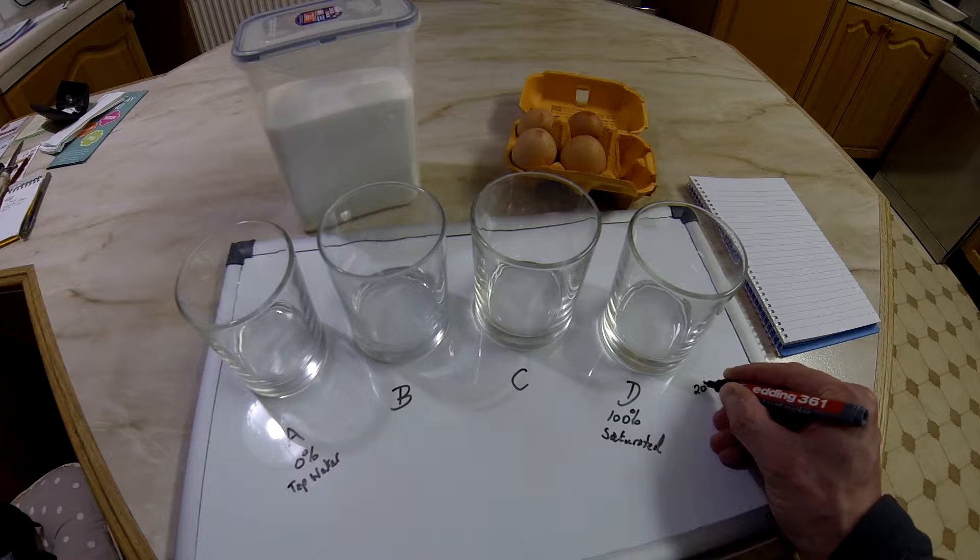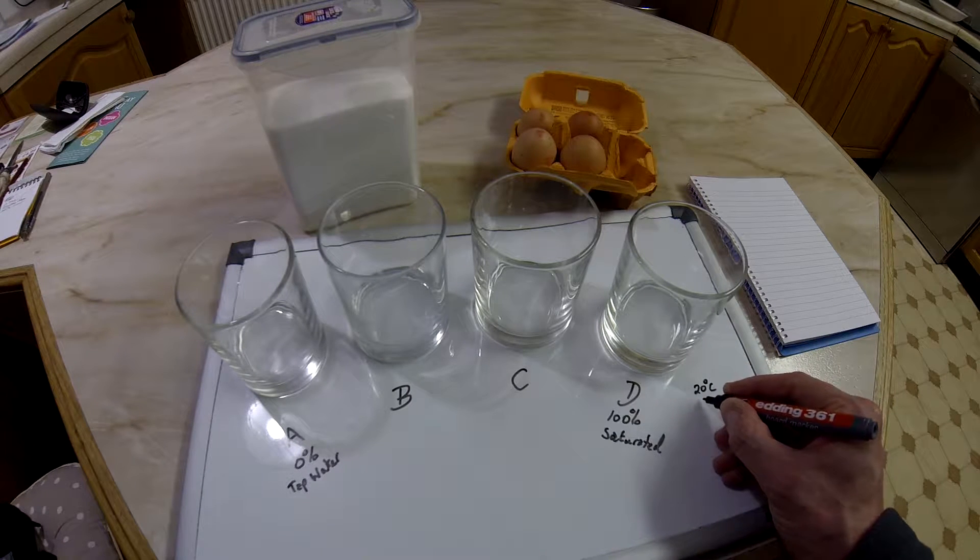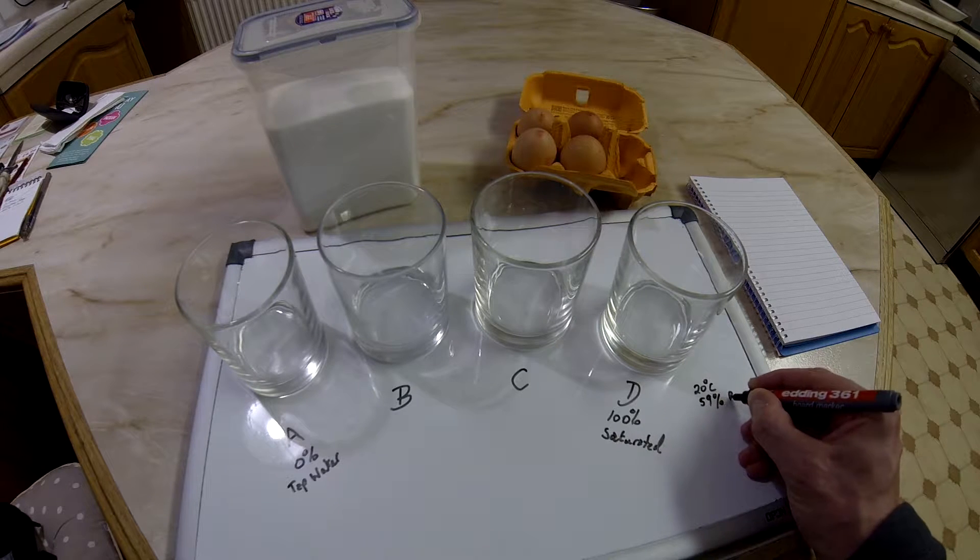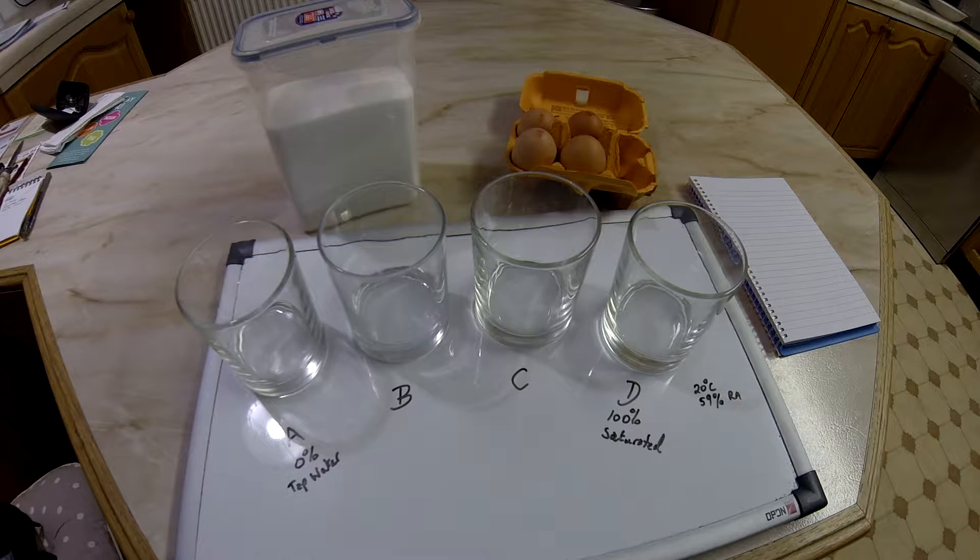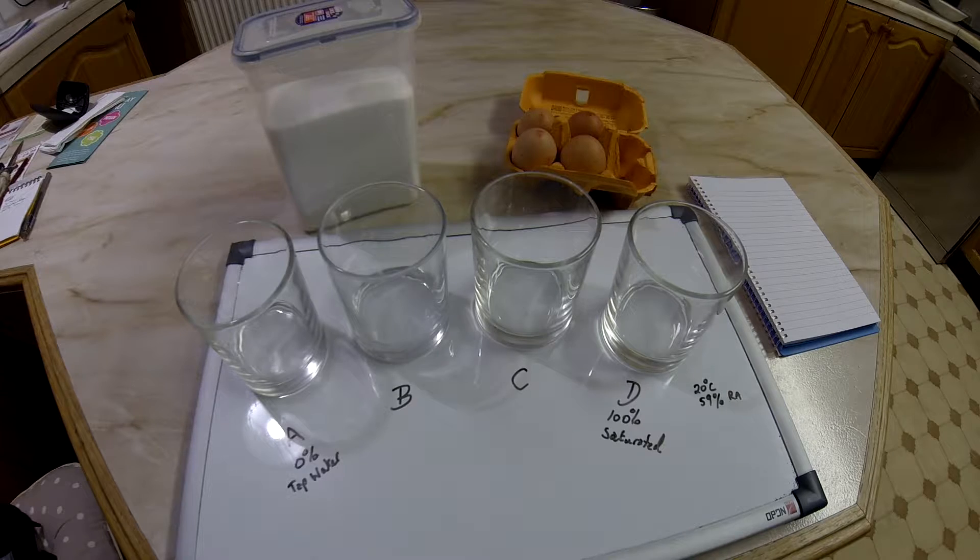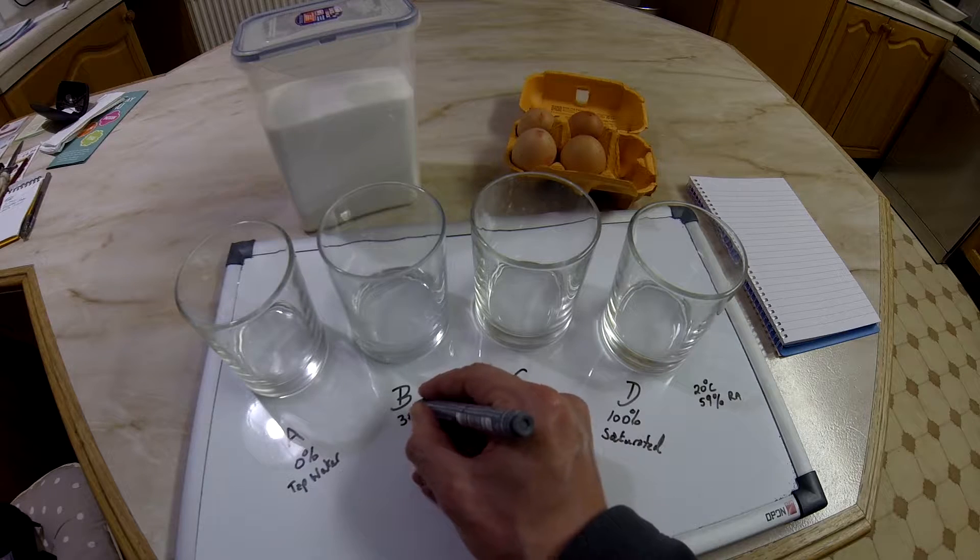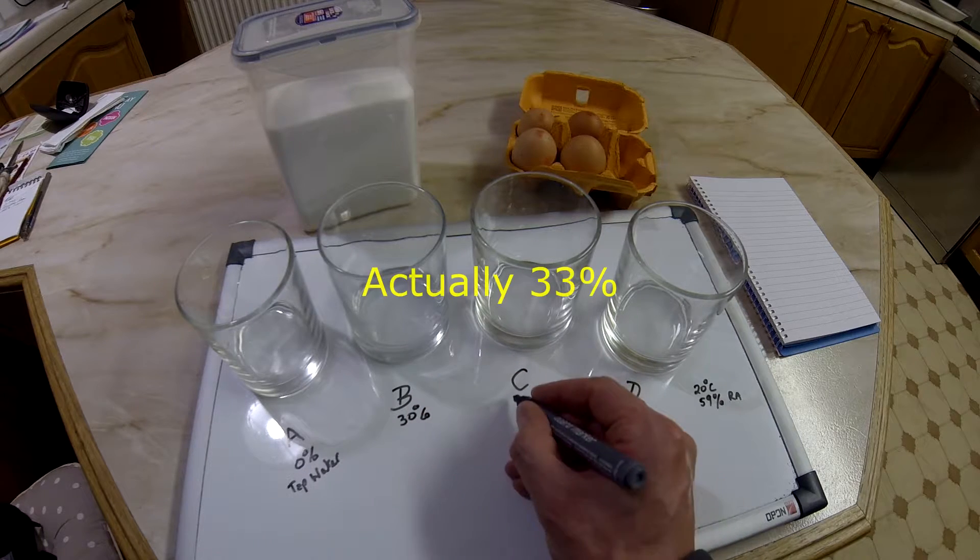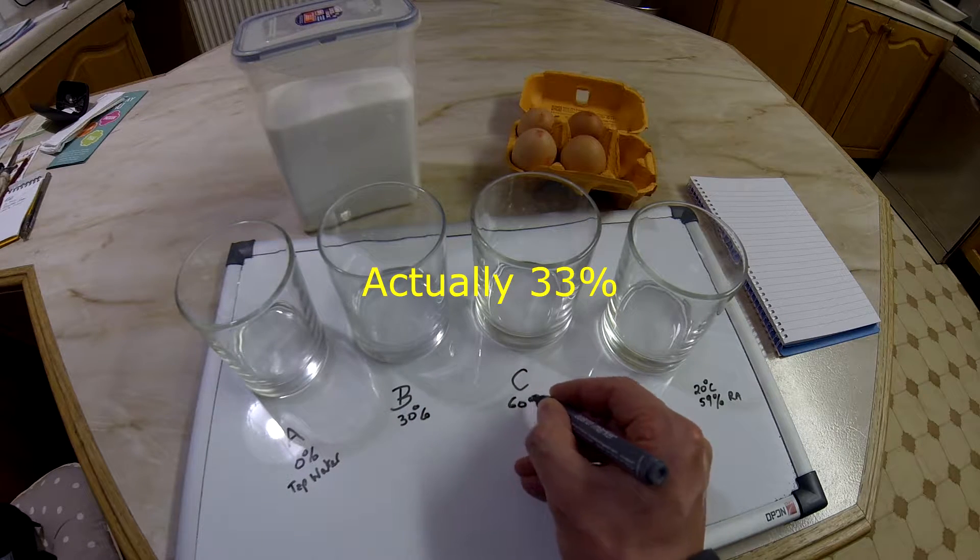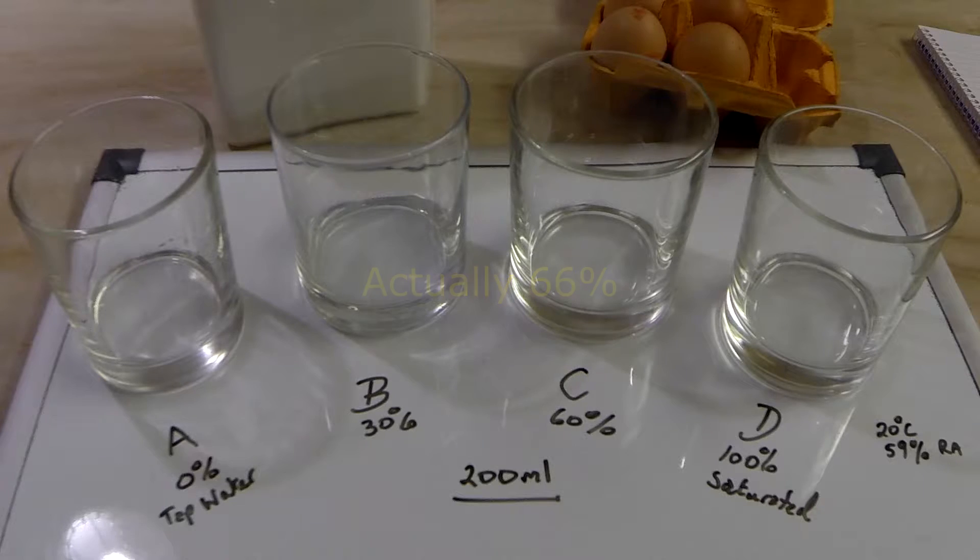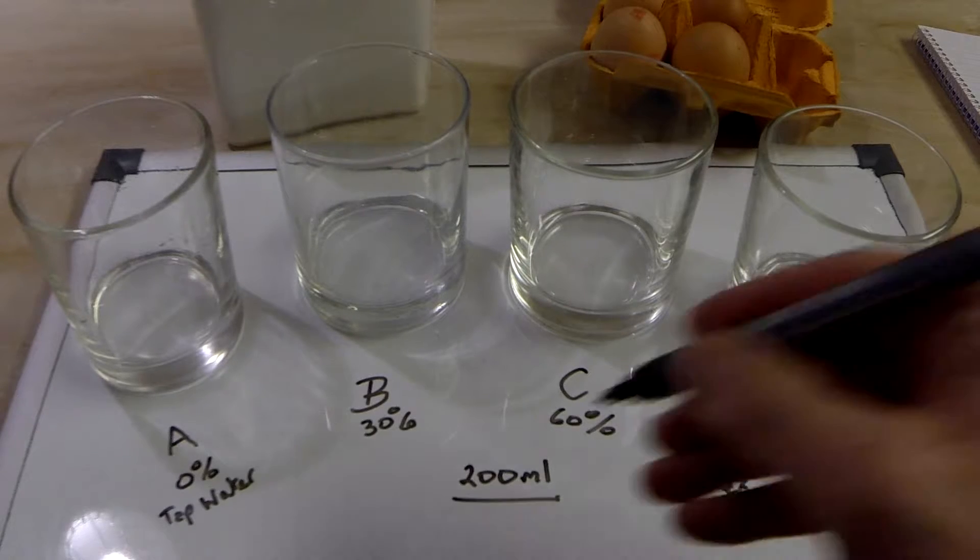Current temperature in the kitchen is 20 degrees C and it's 59% relative humidity. Once I've found out how much salt takes it to saturation, to 100%, I shall be putting 30% of that into B and 60% of that into C. I shall be putting 200 milliliters into each glass.